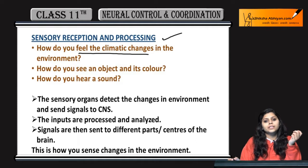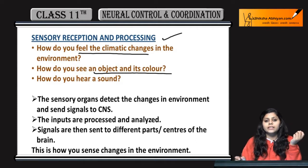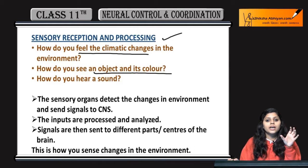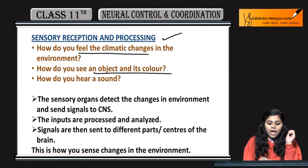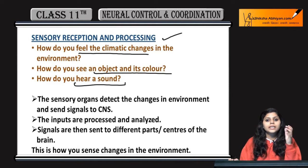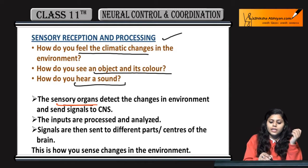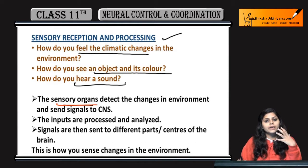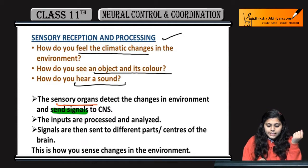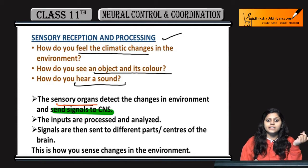How do you see an object and its color? How do you hear a sound or some noise? Sensory organs detect any changes in our environment and send signals to the CNS.